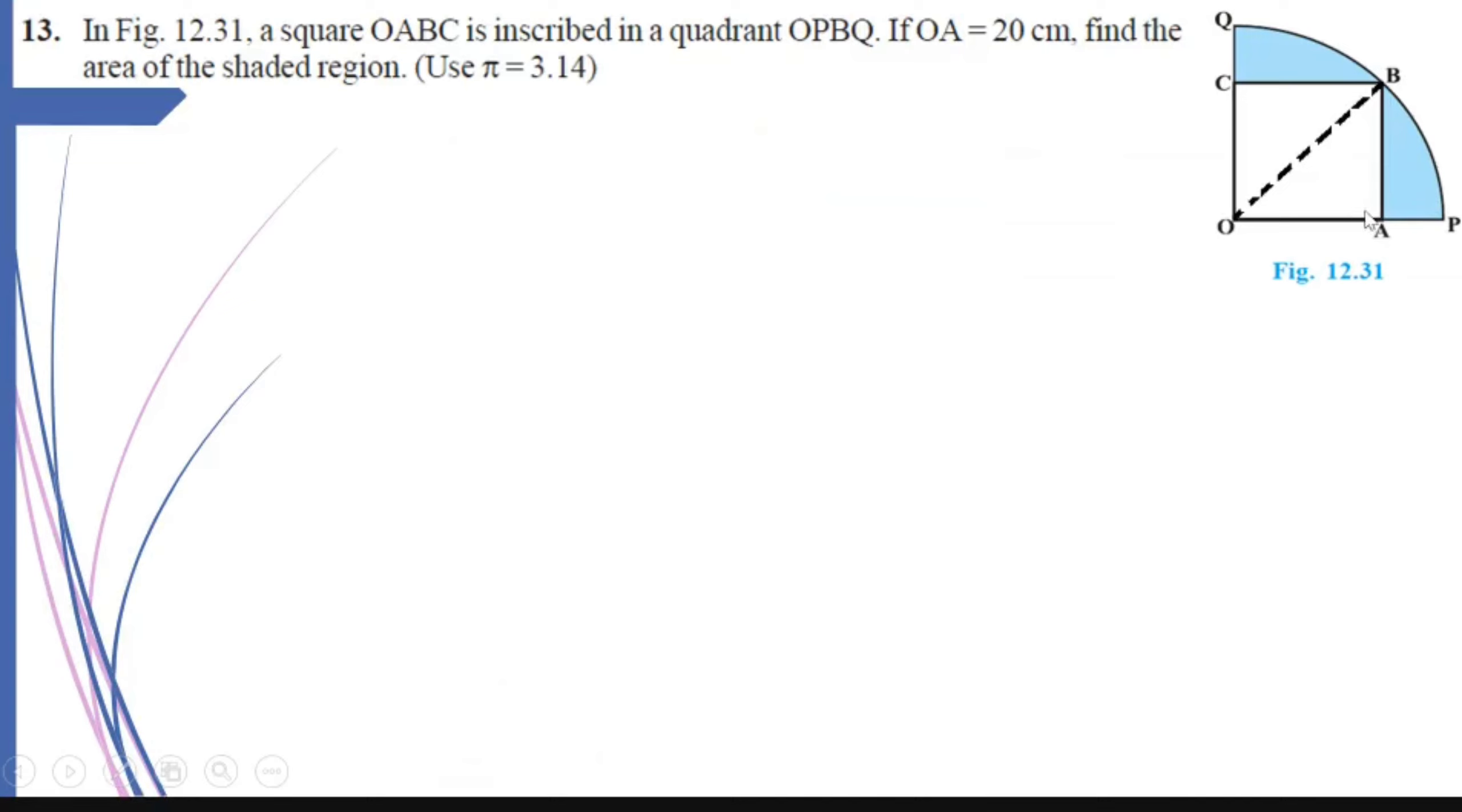So, using the Pythagoras theorem or the formula for the diagonal directly, I can find out the length of OB. Once I know OB, I know the radius of the quadrant. So from the quadrant, if I subtract the area of the square, I will get the answer.